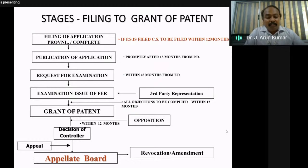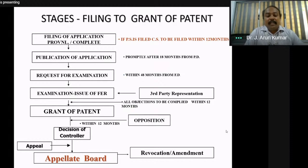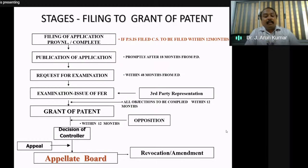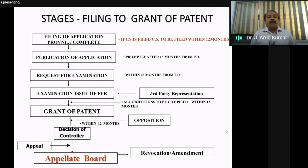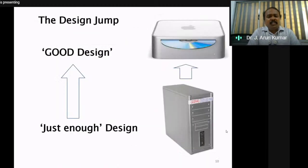You must request examination within 48 months from the filing date. After examination, the office releases the First Examination Report (FER). You then provide explanations for any queries raised in the FER. After that comes the grant of the patent, which is then published in the journal with the complete specification. Within 12 months of grant, there is an opposition period for anyone to oppose — such as for infringement — and the controller then makes a decision.